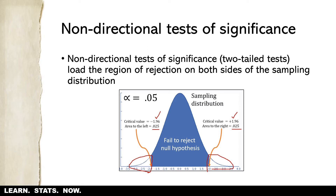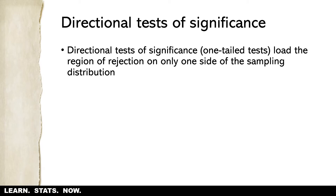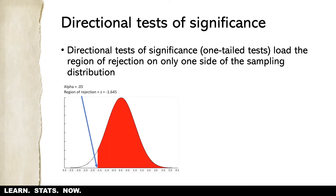There may be times when we would want to conduct what are called directional tests of significance. These are one-tailed tests, and in a one-tailed test we load the entire region of rejection on only one side of the sampling distribution. It could be on either the left or the right depending upon the research question and our hypotheses, but it's going to be on only one side.